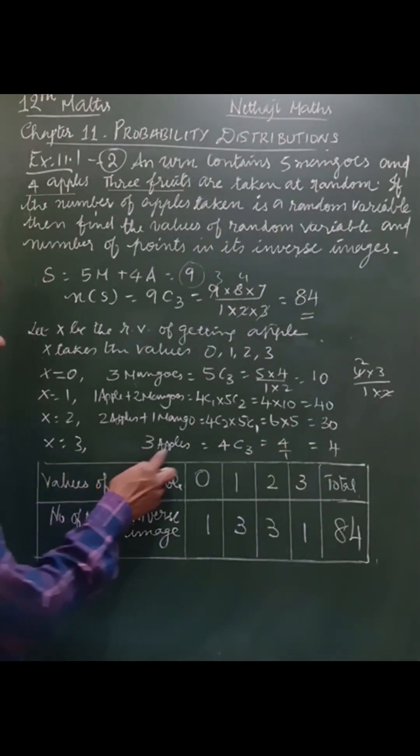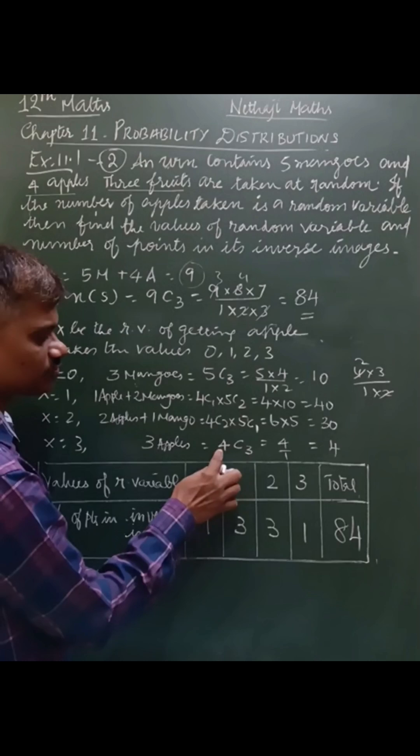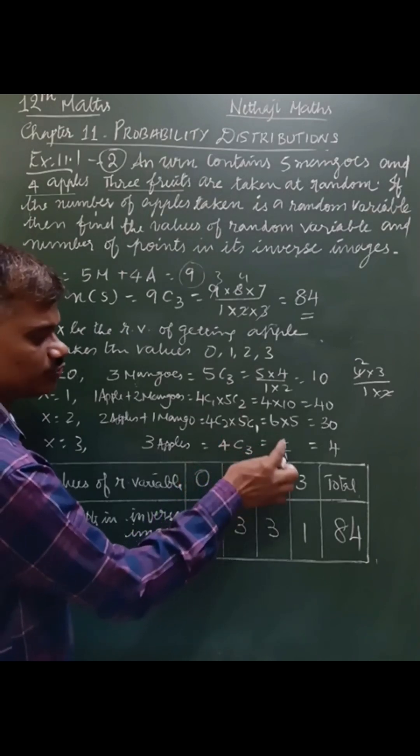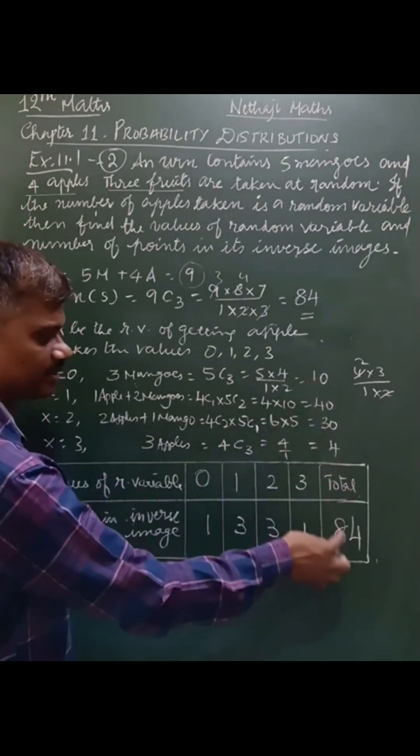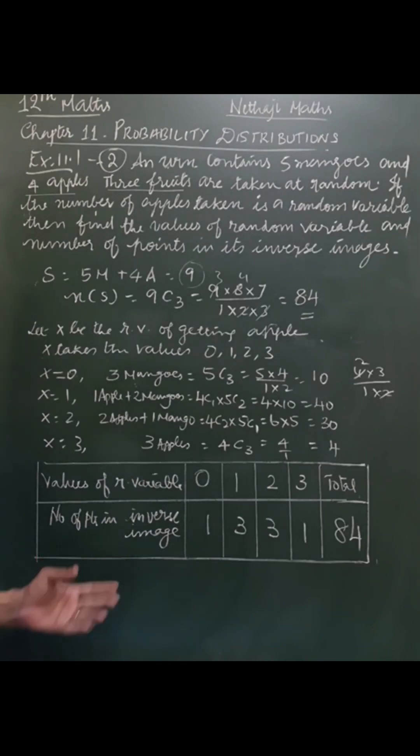When x equals 3, 3 apples. So out of 4, I have to select 3 apples. 4C3, the value of that is 4. The total is 84. So you can write it in the table form.